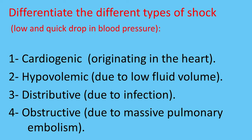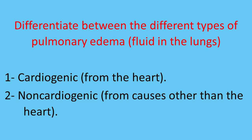We perform right heart catheterization to differentiate different causes of shock — which is rapid dropping blood pressure — and whether the shock is cardiogenic, meaning caused by the heart, or hypovolemic due to low fluid or blood volume, or distributive due to infection, or obstructive due to a massive pulmonary clot referred to as pulmonary embolism obstructing flow of blood to the lungs. Right heart catheterization is also done to differentiate between the causes of why fluid accumulates in the lungs and whether the heart is a contributing factor.